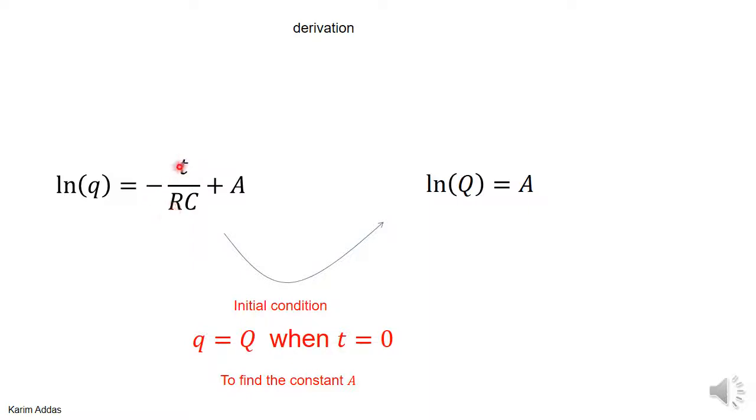So when you put time zero here, this term goes completely, and when you put q equal to Q, that gives you that A is equal to ln(Q). So now we found the constant A for this particular initial condition.